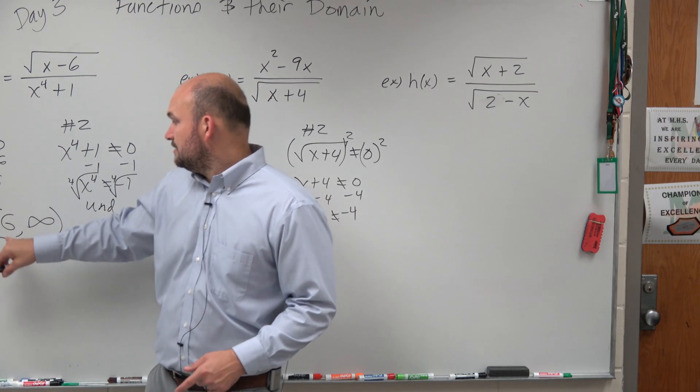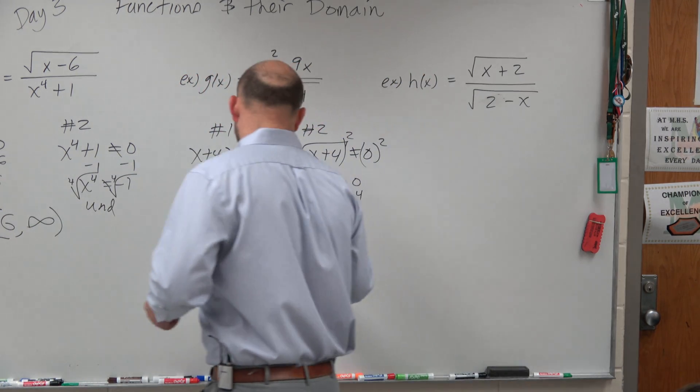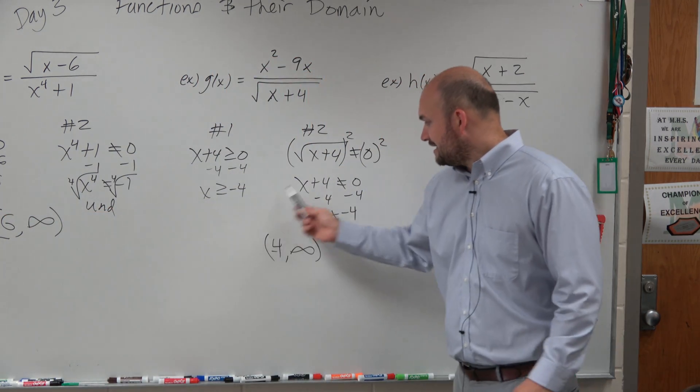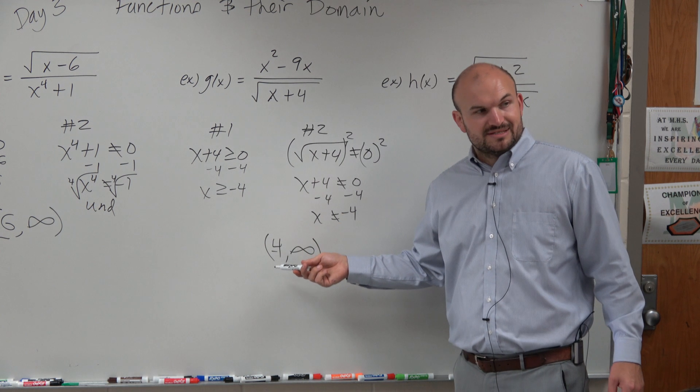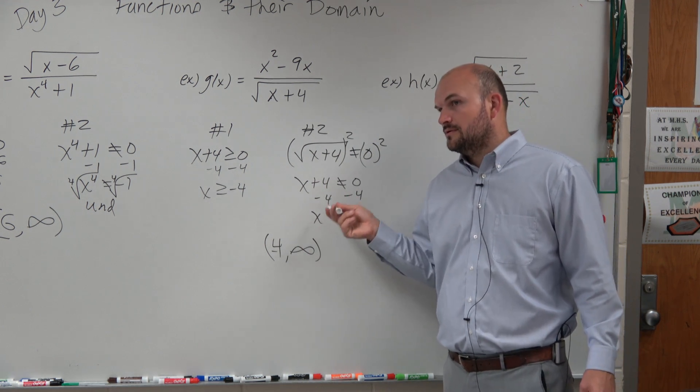So over here, it was contained. It's negative 4. Oh, it's negative 4. Thank you. Over here, it was contained, but over here it's not contained because our second constraint limits it to not equaling negative 4. Alright.